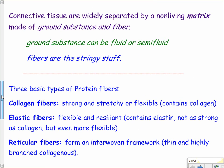Connective tissue cells are separated by a non-living matrix. When we combine the ground substance — that watery, gel-like substance everything sits in — along with the fibers, we call that the matrix. Everything outside the actual cells in connective tissue is called the matrix. It's made of two things: ground substance and fibers. The ground substance can be fluid, semi-fluid, or even hard, as in bone, which has a pretty hard ground substance that contributes to its strength. The fibers are all the stringy stuff.